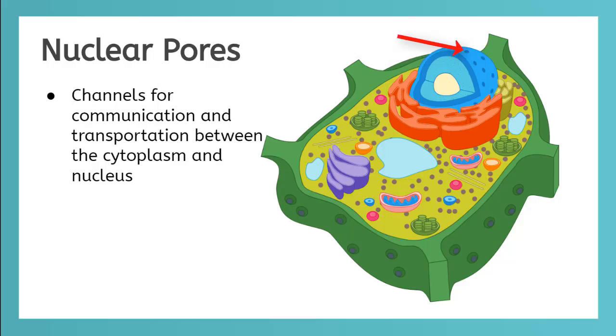The dark blue dots on the nuclear envelope allow materials like proteins to move between the cytoplasm and the nucleus. They act like a ticket booth and only allow certain materials into the nucleus at certain times.